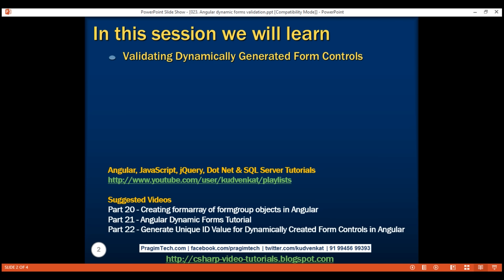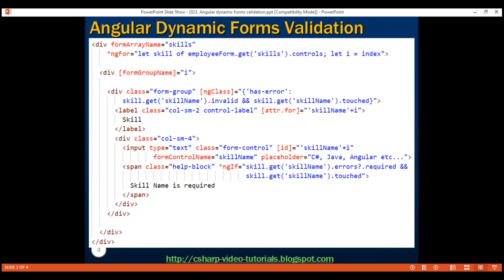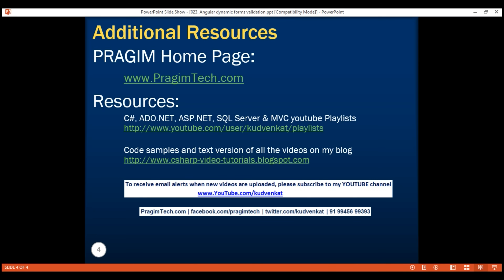To validate dynamically generated form controls, loop through the skills form array and use the loop variable skill to determine if the form control we are currently iterating over is touched, invalid, and has errors. That's it in this video. Thank you for watching and have a great day.